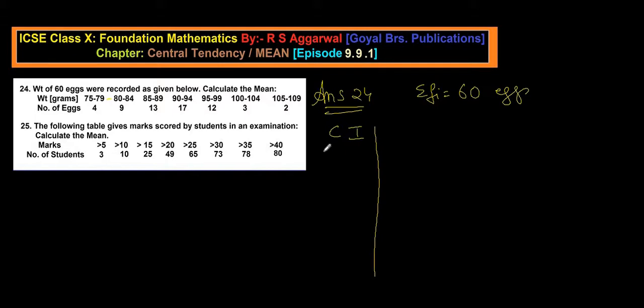So what we do? We subtract 0.5 from the lower limit and add 0.5 in the upper limit. So here it becomes 74.5, 79.5, 79.5, 84.5, 84.5, 89.5, 89.5, 94.5, 94.5, 99.5, 99.5, 104.5, 104.5 and comes 109.5.